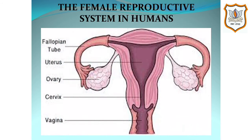This is the diagram of the female reproductive system in humans, which you have to draw in your notebook. In this system, the fallopian tube is there, uterus is there, ovaries, cervix, and vagina are shown. You have to draw this diagram in your notebook.